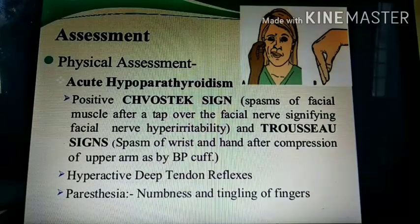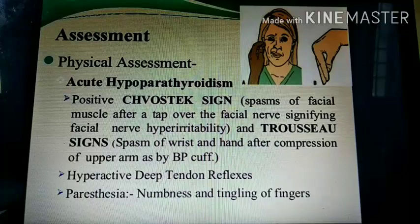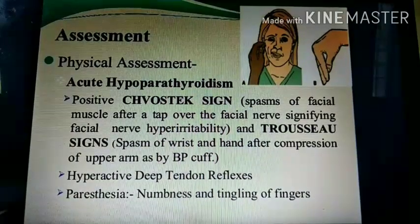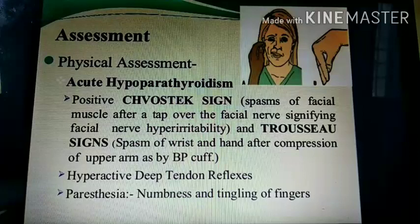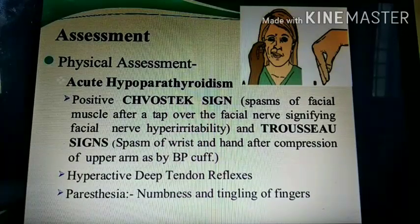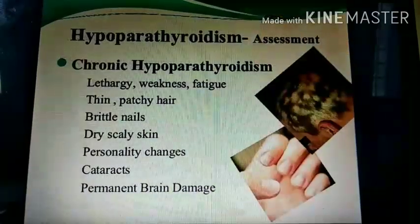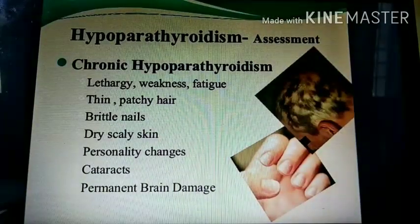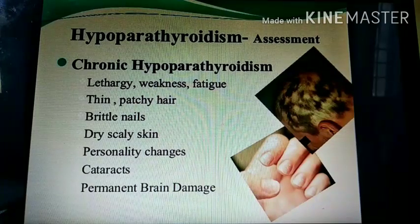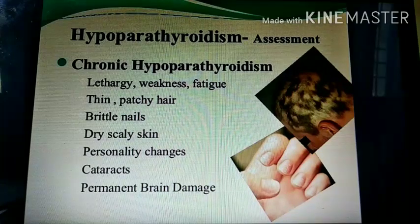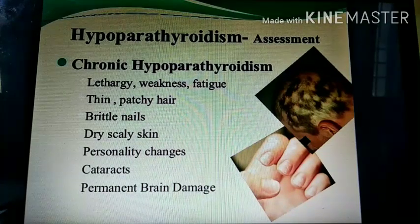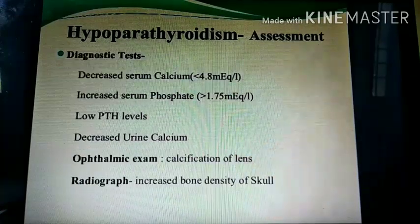In Trousseau's sign, when a BP cuff is inflated on the upper arm, the wrist and hand will go into spasm. These two signs — Chvostek's and Trousseau's — indicate hypocalcemia. Other symptoms include lethargy, weakness, fatigue, thin patchy hair, brittle nails, dry scaly skin, personality changes, cataract (opacity of the lens), and permanent brain damage.